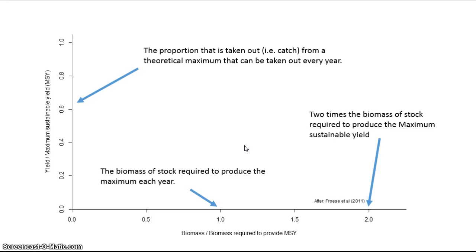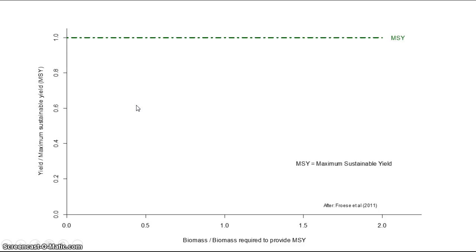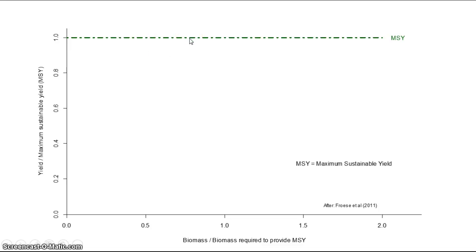This can be a good thing because it offers some insurance against years where perhaps growth is poor, there are few eggs produced, or fisheries managers get it wrong and overestimate stock sizes. The green line here represents the point where the yield taken out — that is the catch — exactly equals the maximum possible, or the maximum sustainable yield. It is the maximum amount that fisheries managers generally like to see taken out of a stock; they don't want to see any more taken out than the maximum sustainable yield.